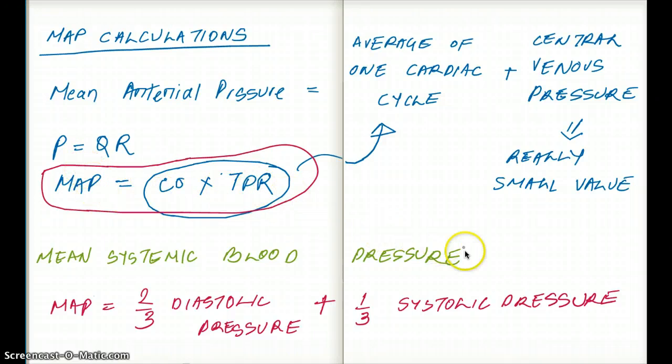Our main concern is pressure, not really whether it's mean arterial or mean systemic pressure. That's one equation for mean arterial pressure. Another common example that we often use is two-thirds of diastolic pressure plus one-third of systolic pressure. That is also a commonly used equation on USMLE.